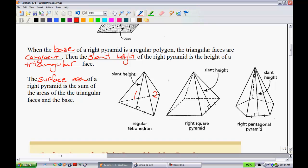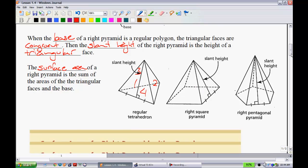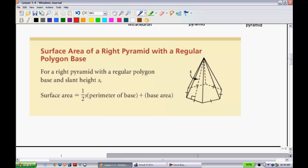For instance, this one you'd have one, two, three triangles, and then the fourth would be the triangle on the bottom. This one would be one, two, three, four triangles plus the base on the bottom. The formula to calculate the surface area of a right pyramid with a regular polygon base is as follows: it's one half, this S represents the slant, times the perimeter of the base, plus whatever that base area is. That's what we're going to use in the examples to follow.